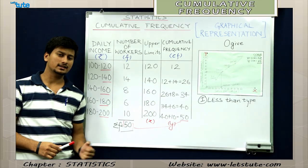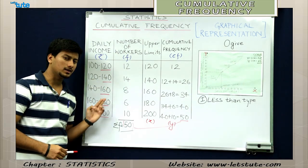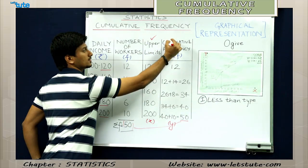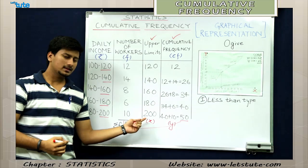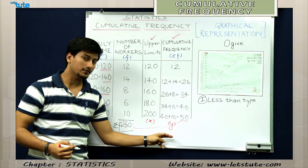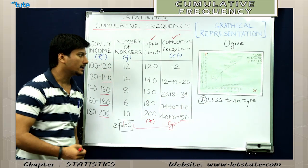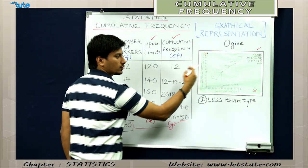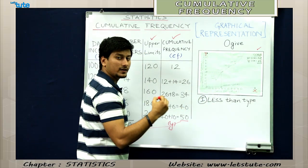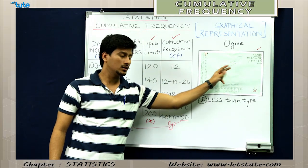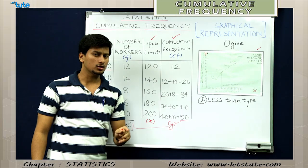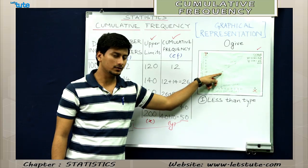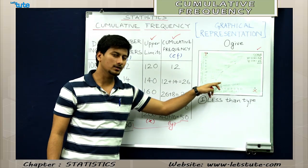Let's quickly summarize the less than type method. First, identify the upper limits from your data. Second, calculate the cumulative frequencies. Third, mark the upper limits on the x-axis and cumulative frequency on the y-axis. Fourth, set the scales for your graph and plot the points. Fifth, form a freehand smooth curve — this is the less than type ogive. To find the median of grouped data, use the formula n by 2, locate that value on the y-axis, touch the curve, and drop to the x-axis.